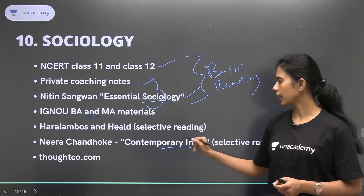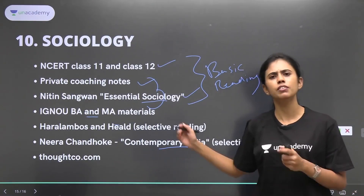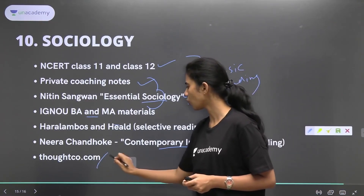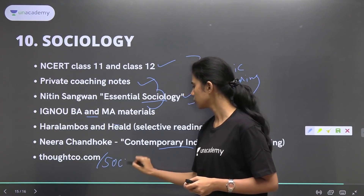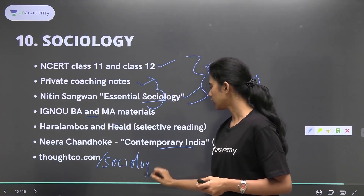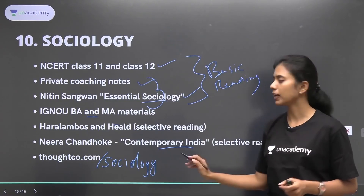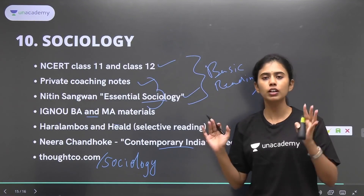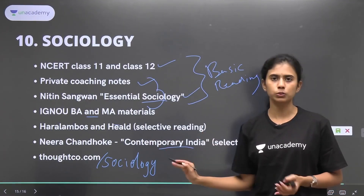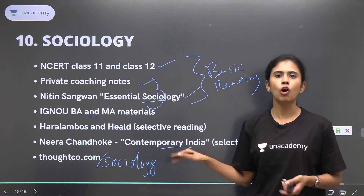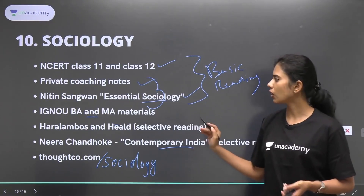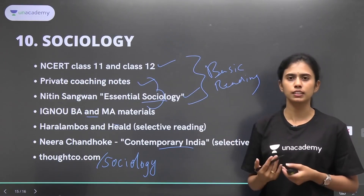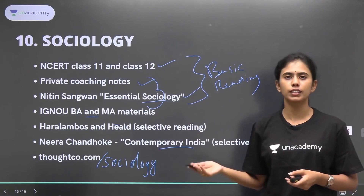There is also a site called Thoughtco.com — it is an international website. If you go to Thoughtco.com/sociology, you will get a lot of articles explaining most of the syllabus topics in a very beautiful manner, just the way you want for a proper answer. That is my comprehensive book list for Sociology. Whatever else was left was usually covered through the test series and the answer keys I received for the test series.